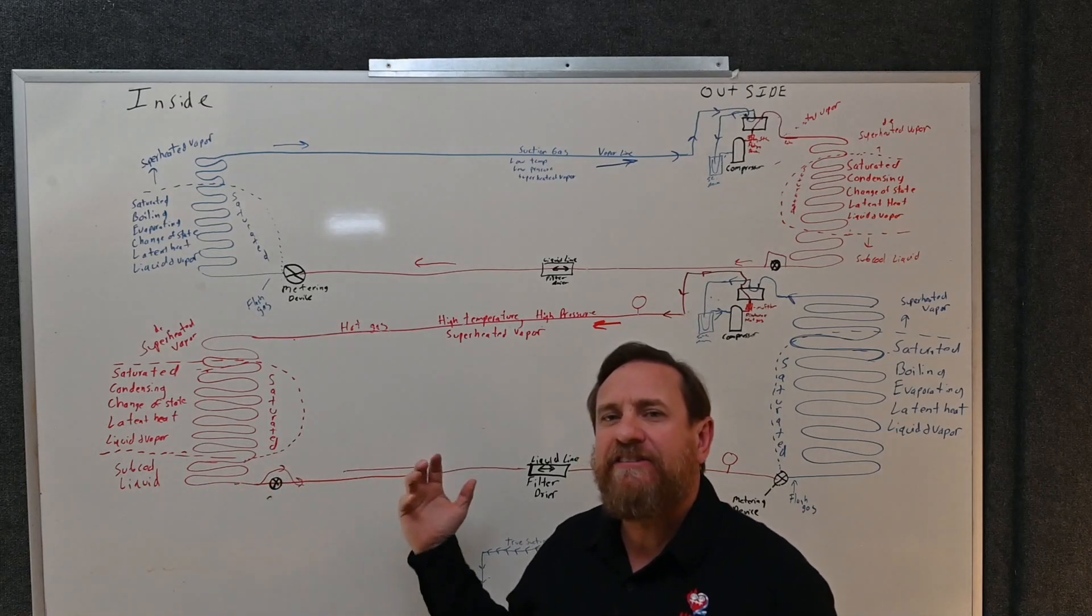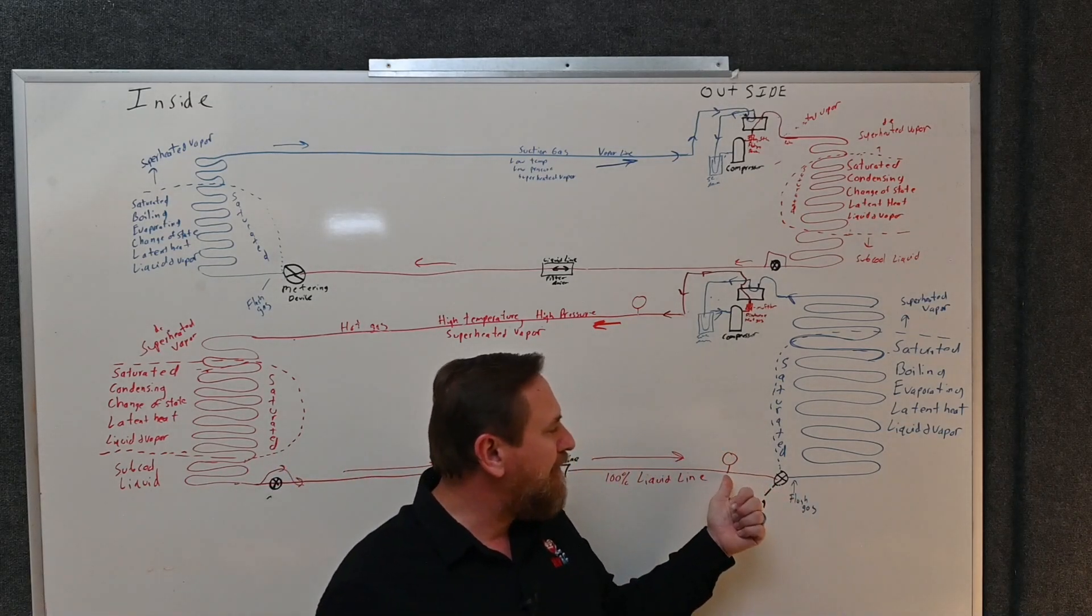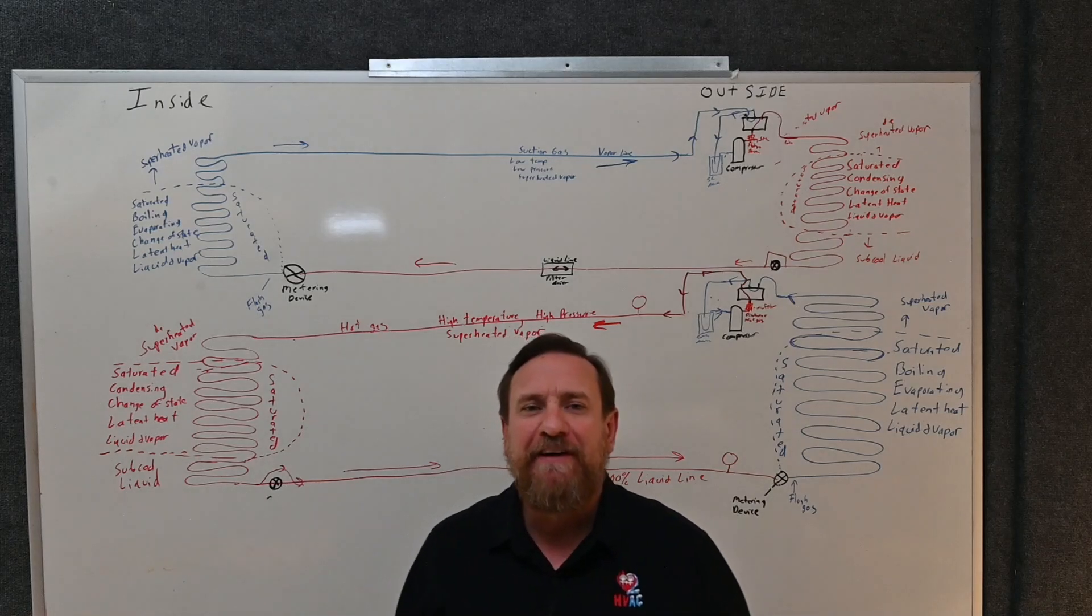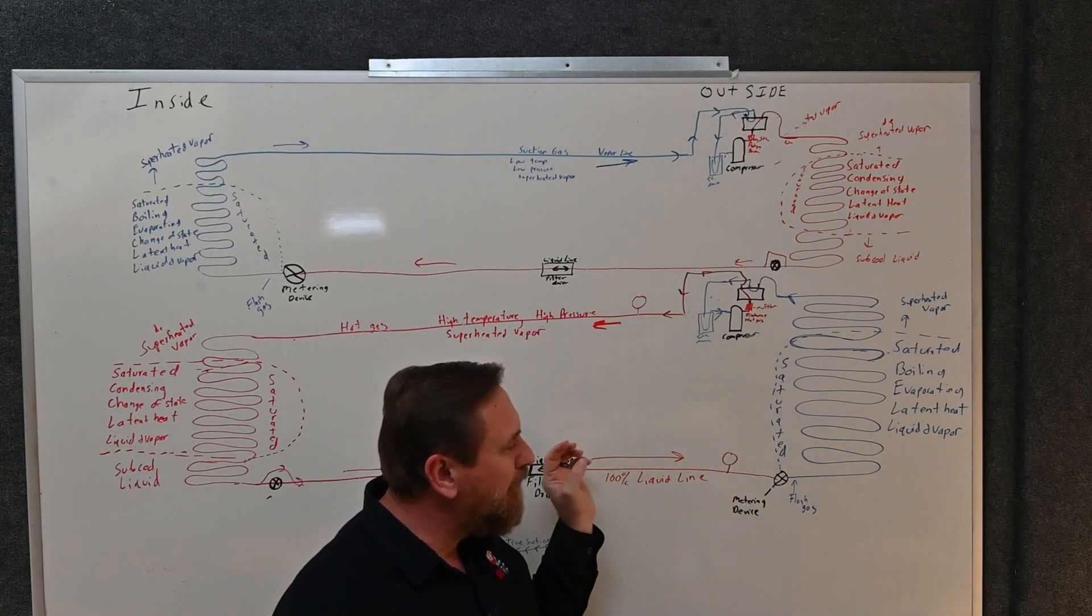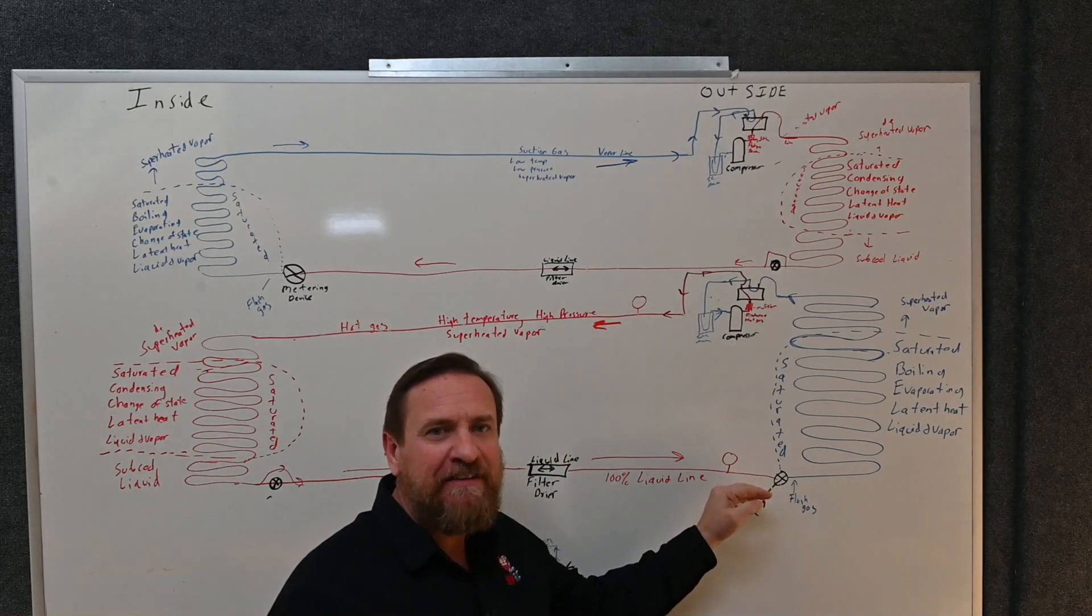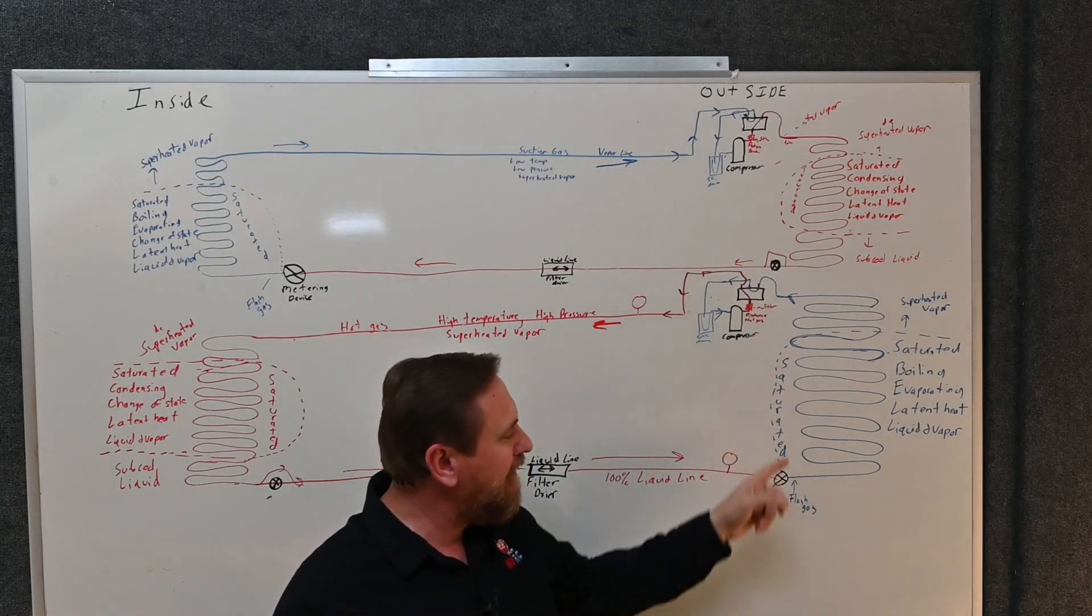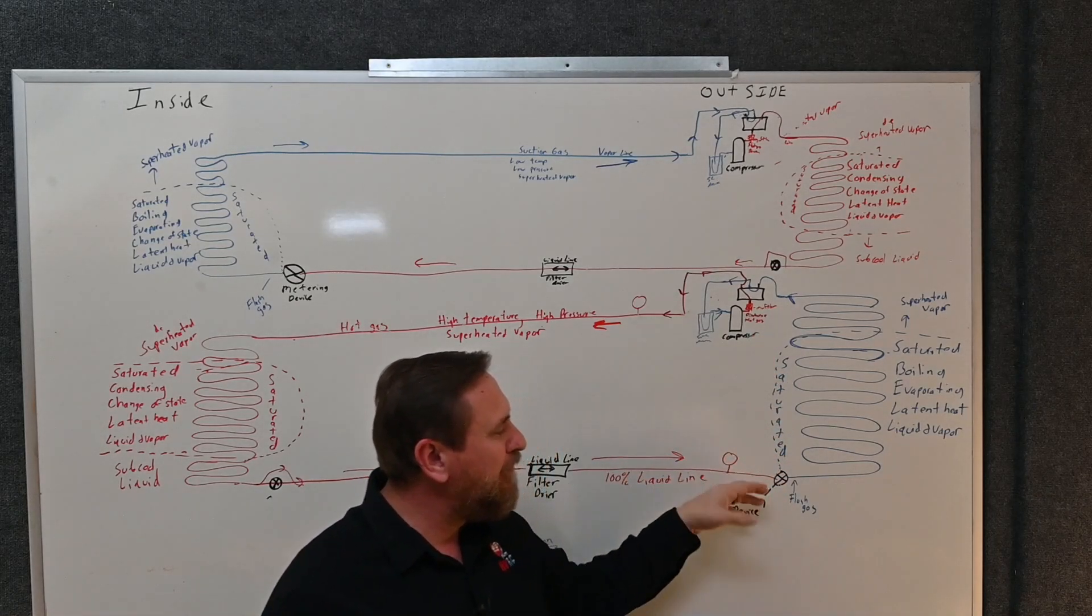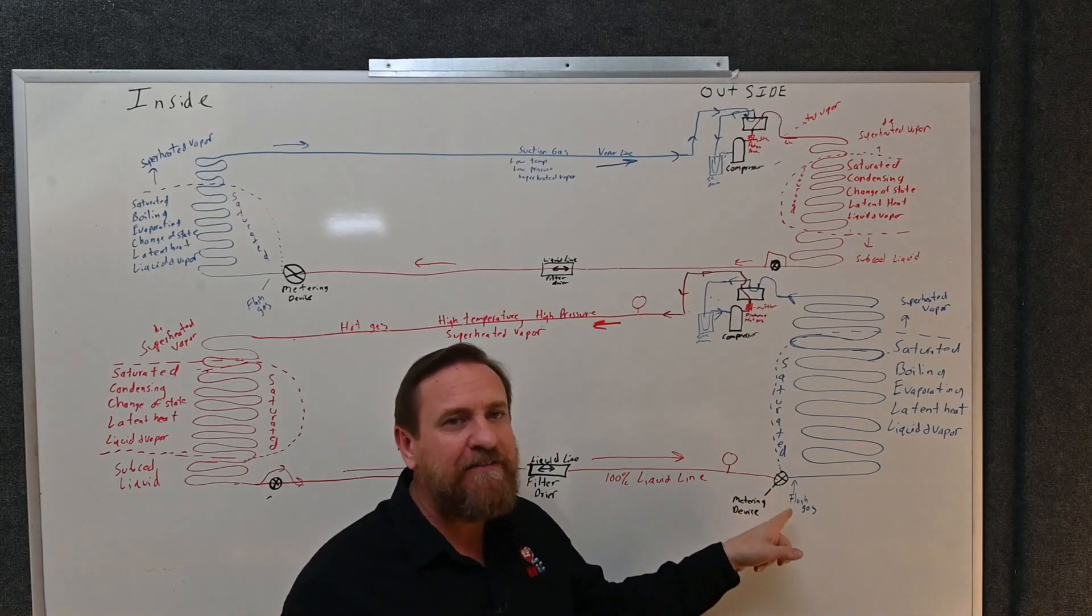Being able to check what our pressure is here is going to be very important, and we can also do subcooling here. We can see, hey, our subcooling, we have high pressure and the proper amount of subcooling feeding this meter device. I don't have to worry about a problem on this side. I know that my suction pressure is too low here and I'm feeding the right amount of subcooling, plenty of pressure to my meter device here. We can start looking at this meter device.